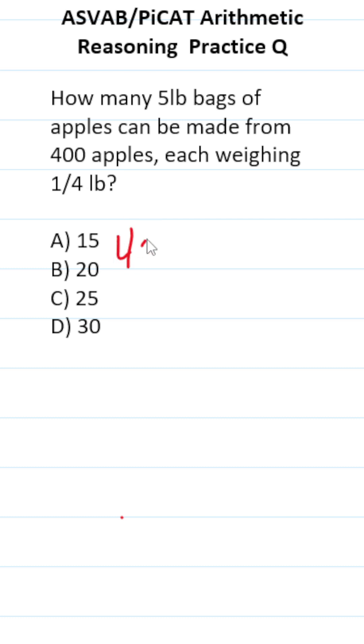So we have 400 apples, and they each weigh a quarter of a pound. So how much do those 400 apples weigh? We'll take 400 and multiply it by one-fourth.